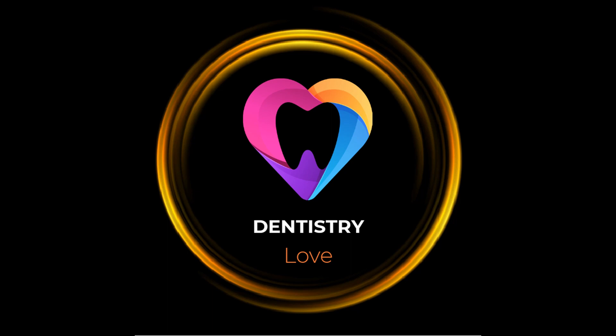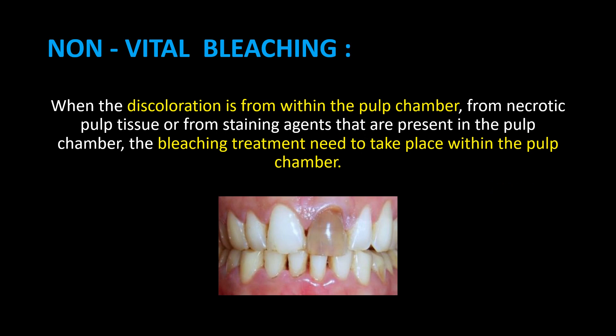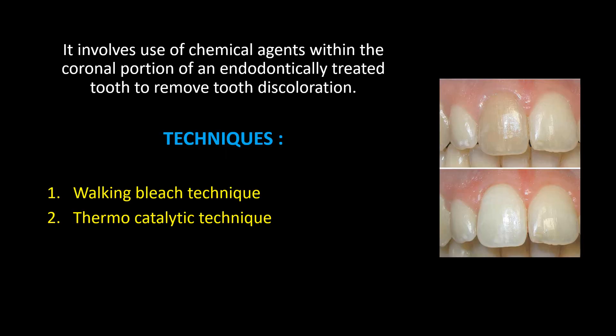Welcome to Dentistry Love Channel. Bleaching Part 7: Non-Vital Bleaching. When the discoloration is from within the pulp chamber, from necrotic pulp tissue or from staining agents present in the pulp chamber, the bleaching treatment needs to take place within the pulp chamber. It involves use of chemical agents within the coronal portion of an endodontically treated tooth to remove tooth discoloration.